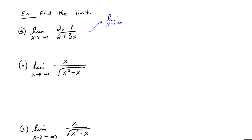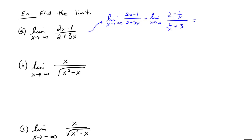The highest power in the denominator is x, so we divide through by x. If I divide the numerator by x I get two minus one over x; if I divide the denominator I get two over x plus three. When I take everything to infinity, two stays two, one over x goes to zero, two over x goes to zero, and three stays three — so I end up with two over three.